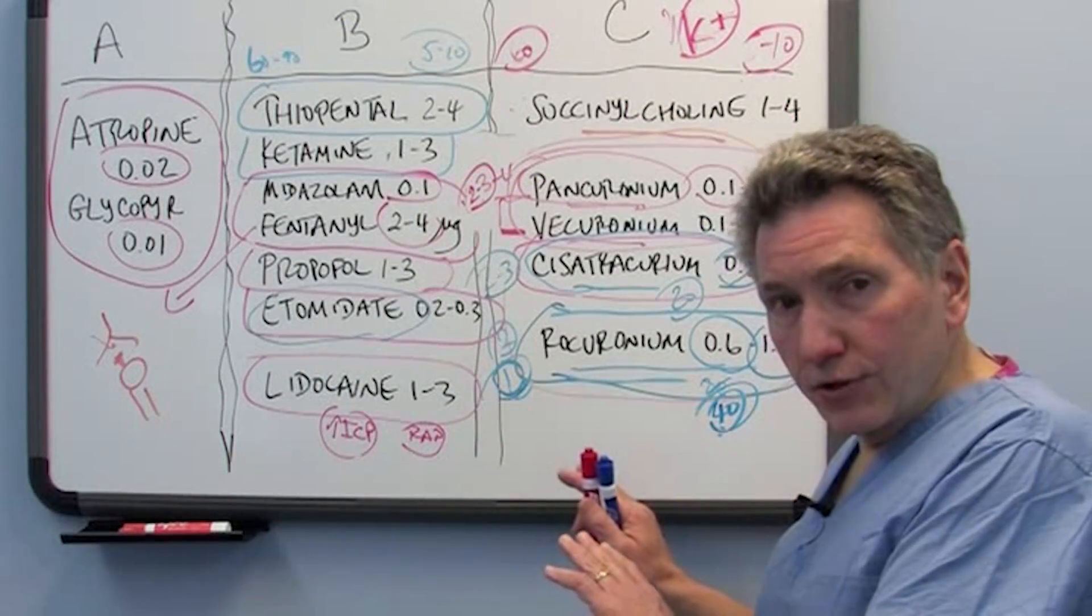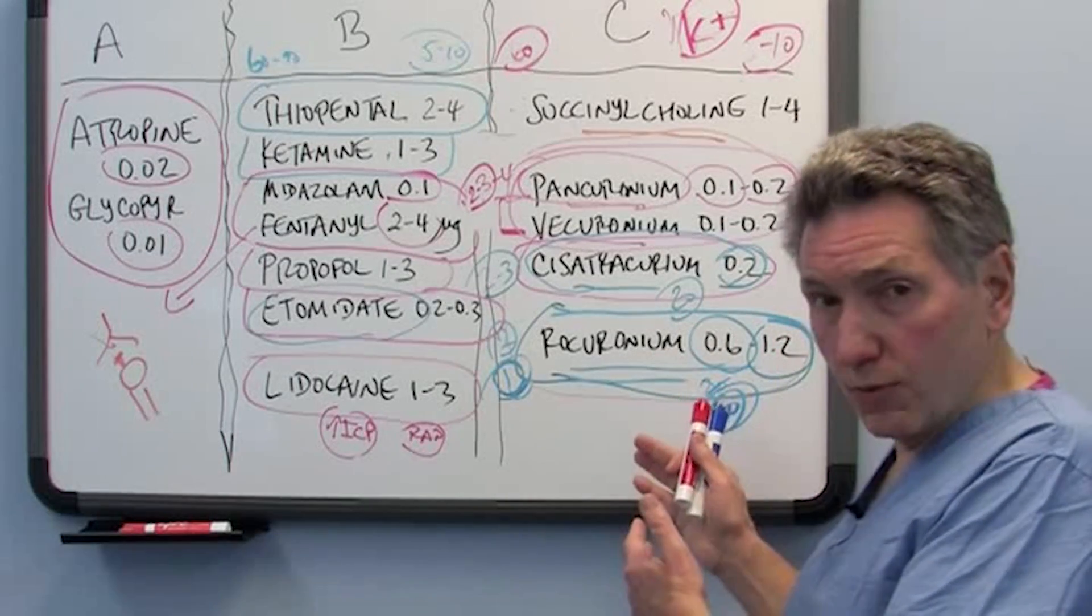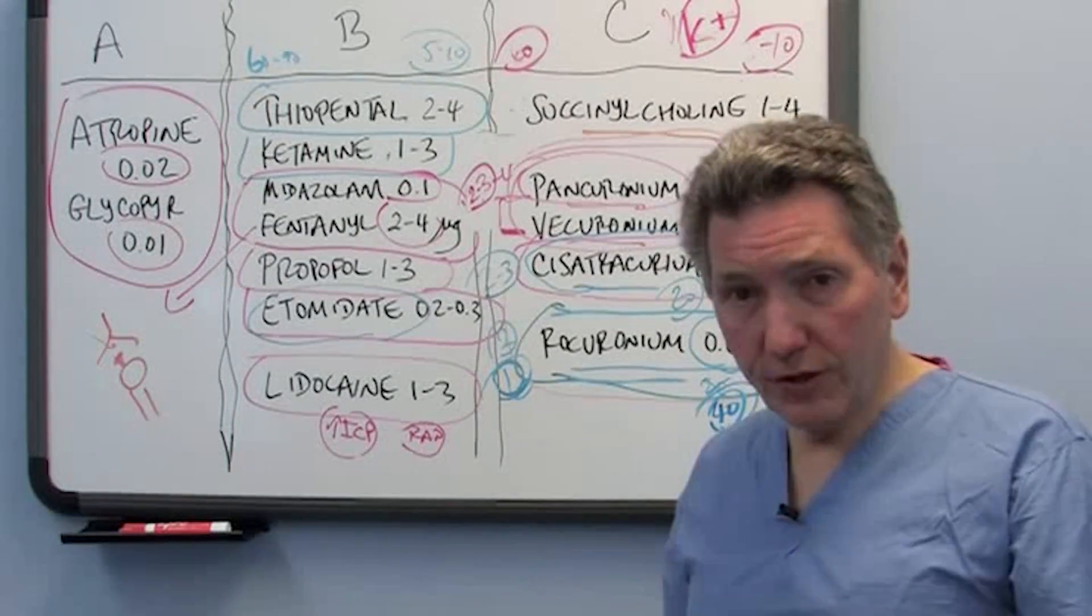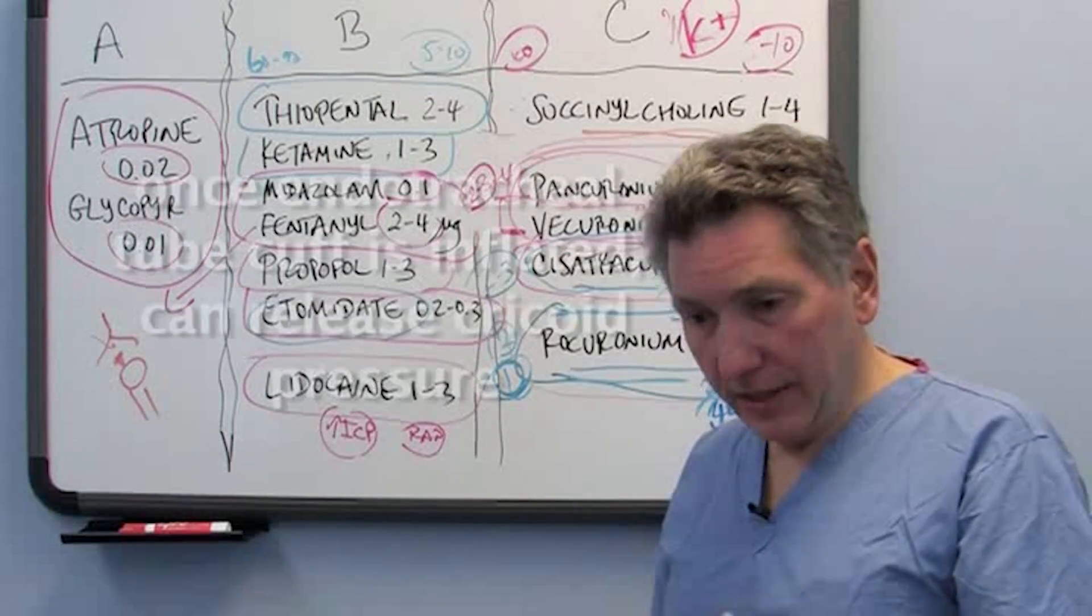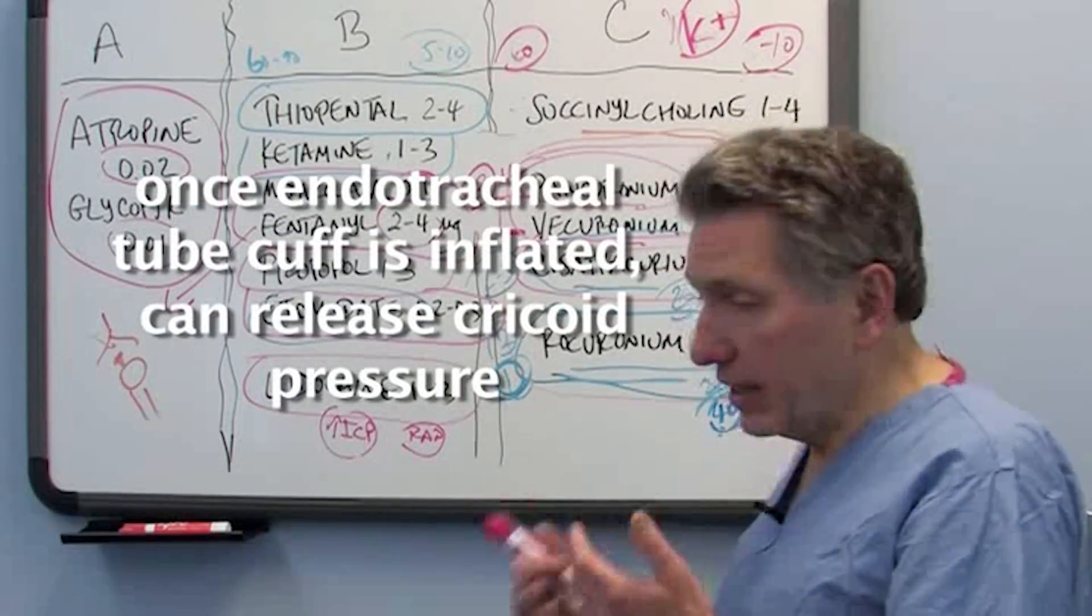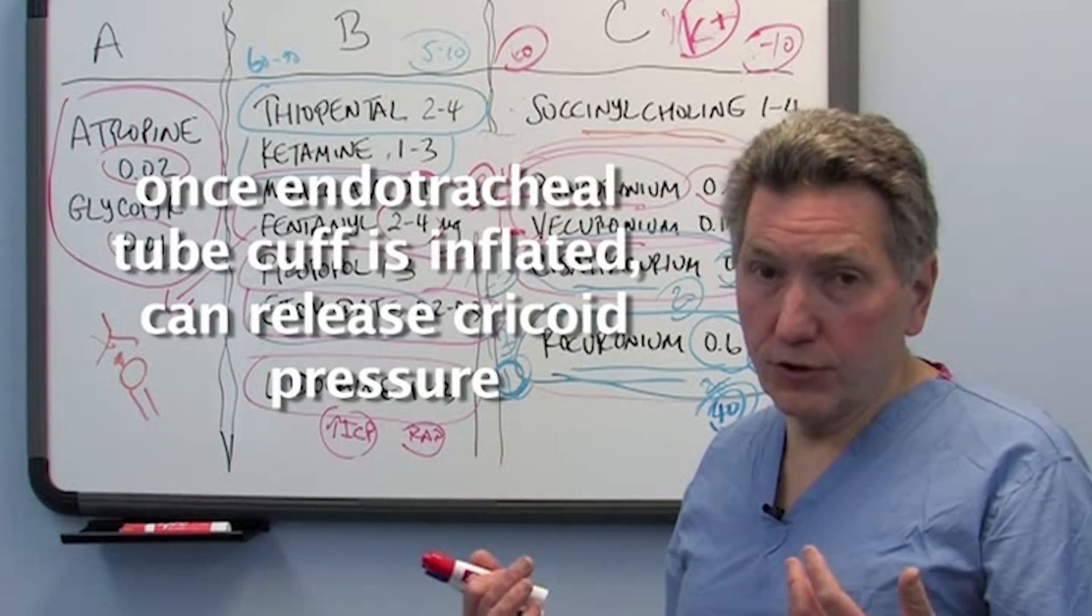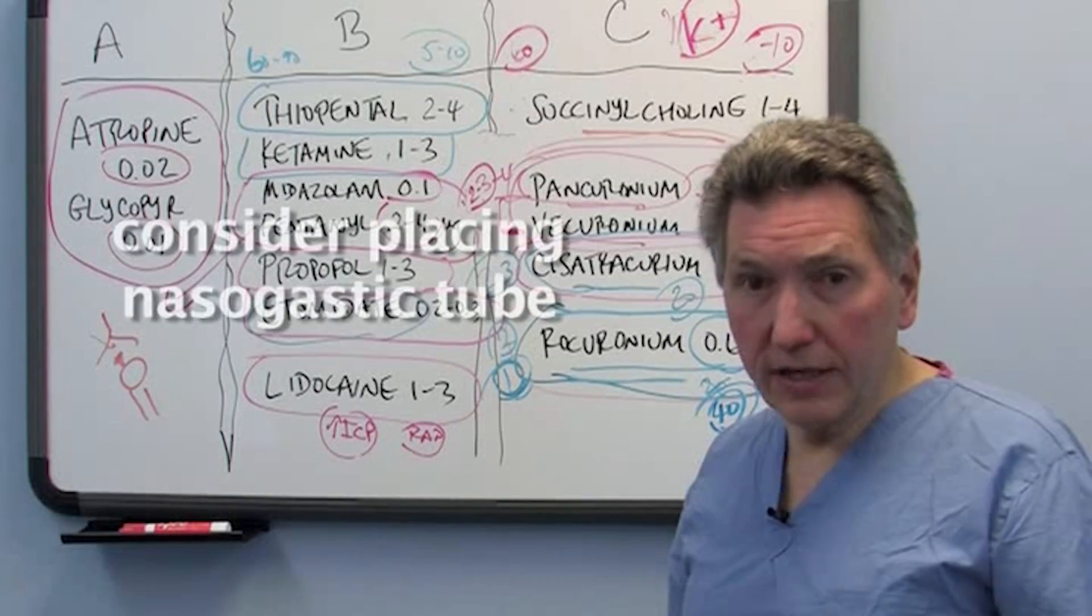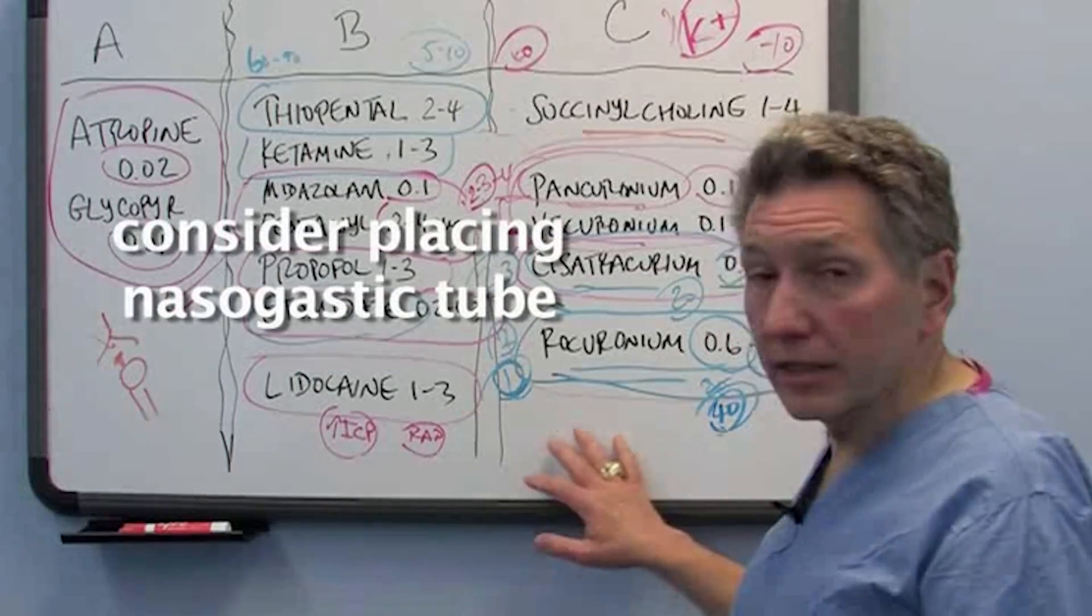Get the endotracheal tube in in the standard fashion after your relaxant has worked, and you do have to make sure that you give it enough time to work. Once you're convinced you're in and the endotracheal cuff is blown up, if you're using a cuff tube, then it's safe to let go of the cricoid pressure and ventilate the patient, and then at that point perhaps drop a nasogastric tube to empty the stomach a little bit more.